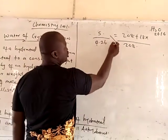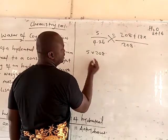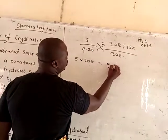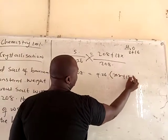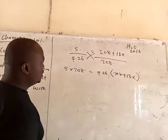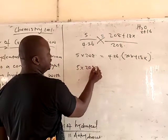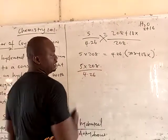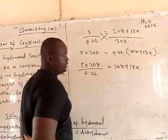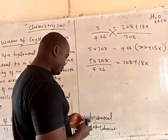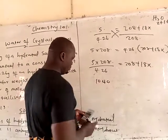The first thing to do is cross-multiply. So you have 5 times 208 on one side, equal to 4.26 times (208 + 18x). Then you rearrange: 5 times 208 divided by 4.26 equals 208 plus 18x. Five times 208 gives 1,040. Divided by 4.26, you get 244.13, which equals 208 plus 18x.